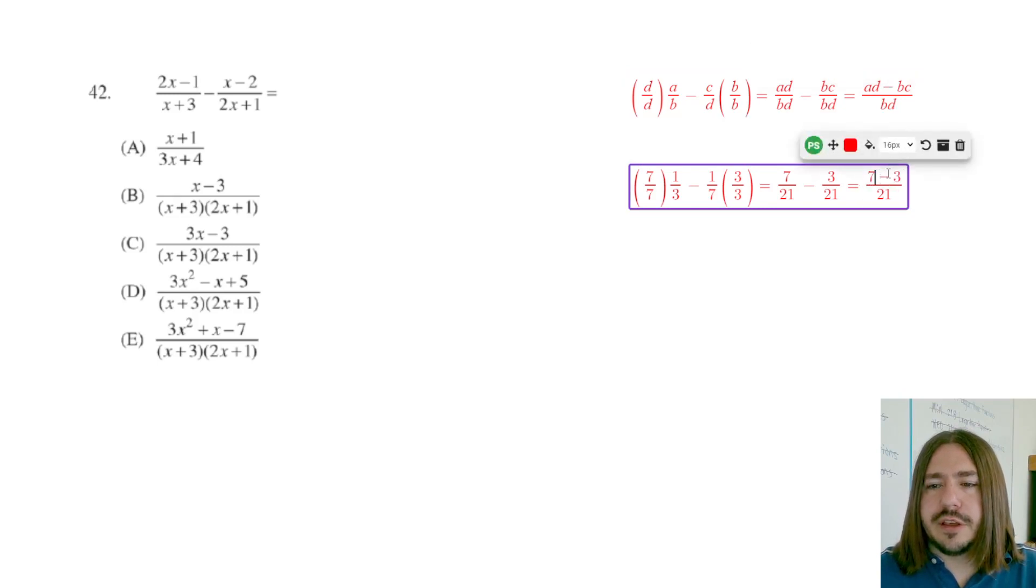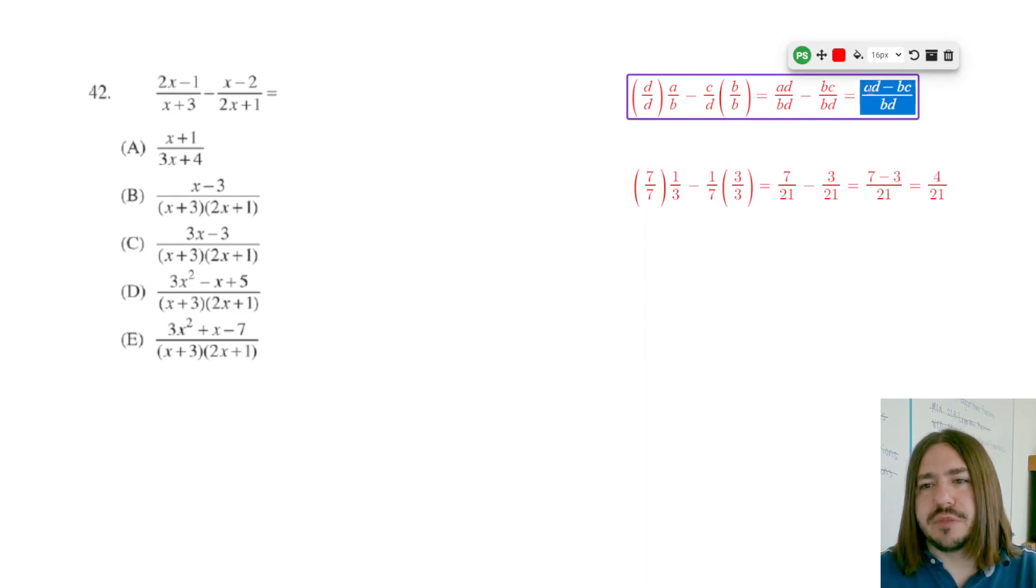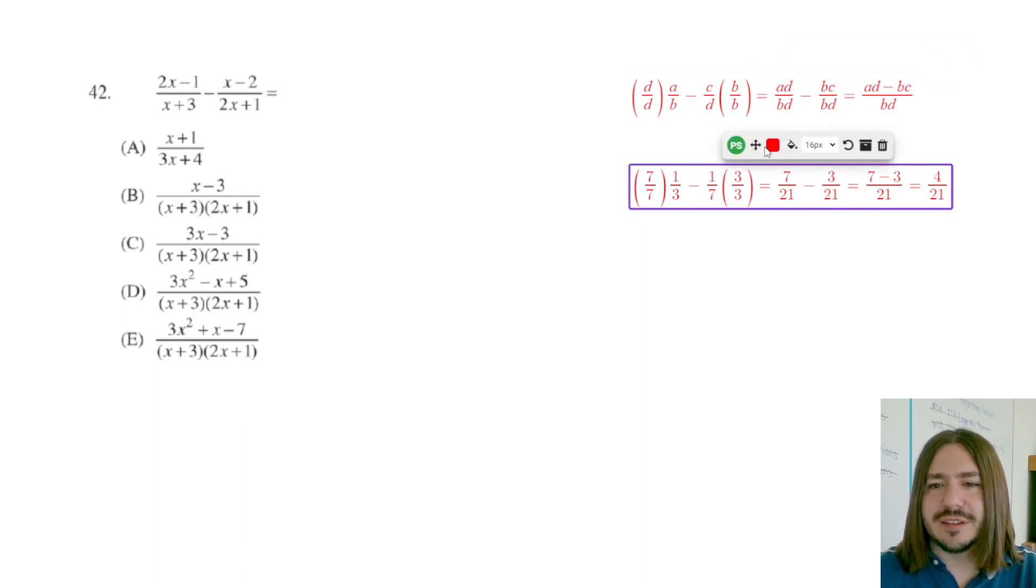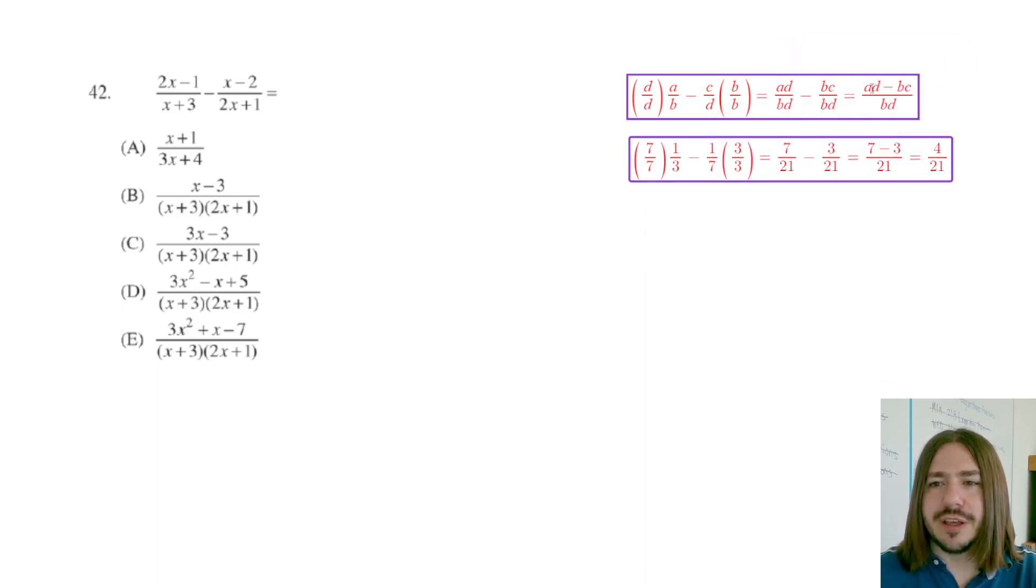Now seven minus three is going to be four. I'm actually just going to leave that as a separate step, four over 21. Up here, I can't really reduce that. There's nothing, we're in sort of the general realm here. We're trying to express how to subtract generally, we can't simplify this anymore. So we're just going to leave it like that. So this is basically what you're going to get when you subtract fractions. Here's the general case, specific case.